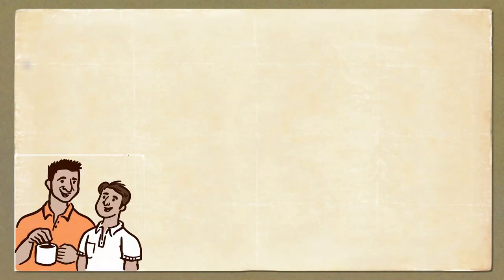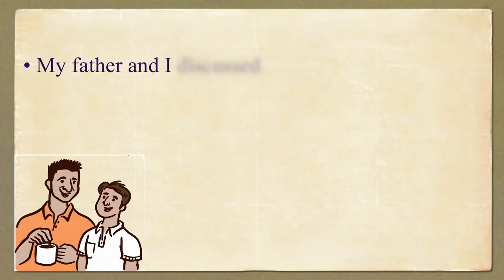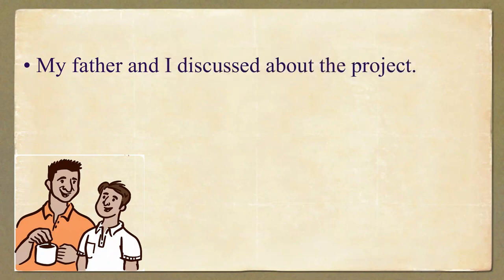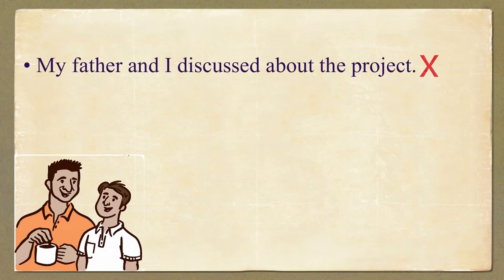The first one is: 'My father and I discussed about the project.' It is incorrect. Now repeat the correct sentence after me.